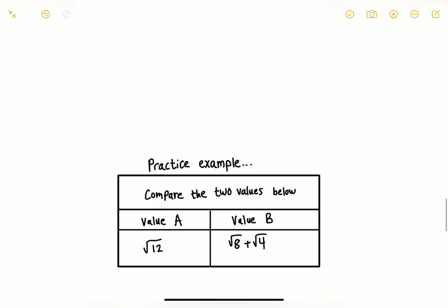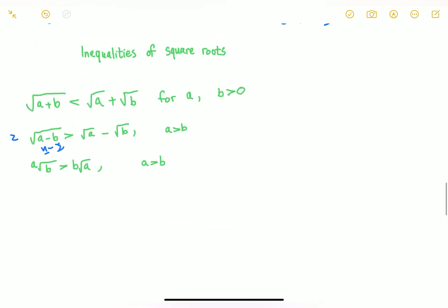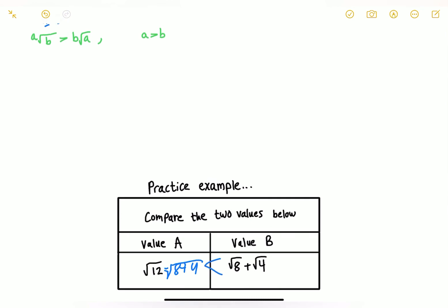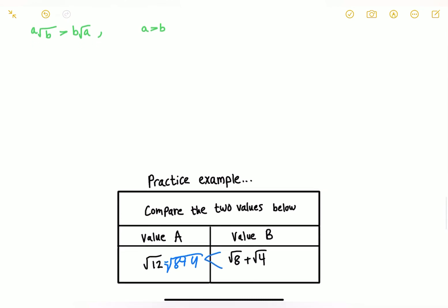Let's see these rules in action. The first example asks us to compare two values: root of 8 plus root of 4 versus root of 12. Root of 12 is the same as root of 8 plus 4. According to our rule, the root of A plus B is less than root of A plus root of B, so value B — the combined separate radicals — is greater.